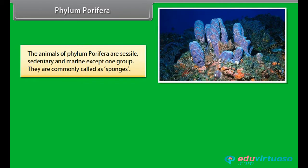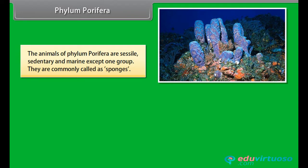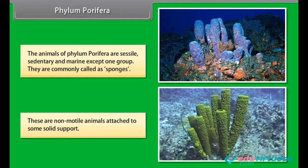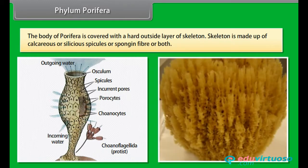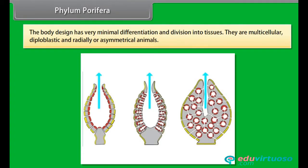The animals of phylum Porifera are sessile, sedentary, and marine except one group. They are commonly called sponges. These are non-motile animals attached to some solid support. The body of Porifera is covered with a hard outside layer of skeleton. Skeleton is made up of calcareous or siliceous spicules, or spongin fiber, or both. The body design has very minimal differentiation and division into tissues. They are multicellular, diploblastic, and radially or asymmetrical animals.